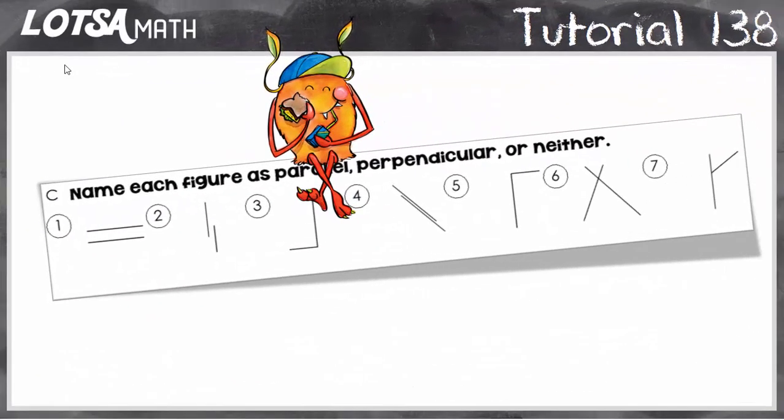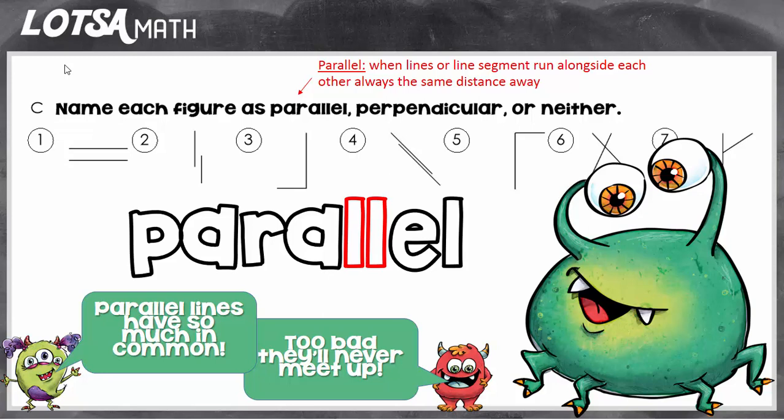For these questions, we're going to name each figure as parallel, perpendicular, or neither. So let's talk about parallel lines. Parallel lines are when lines or line segments run alongside each other, but never meeting up and never crossing, sort of like railroad tracks.